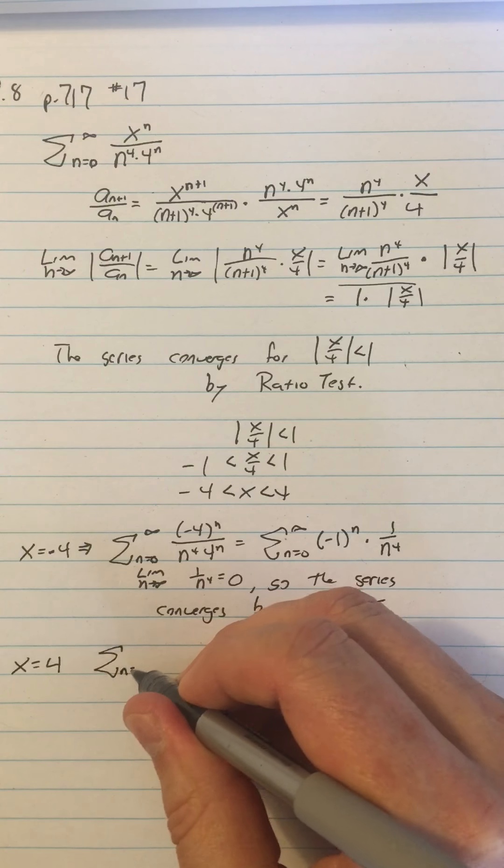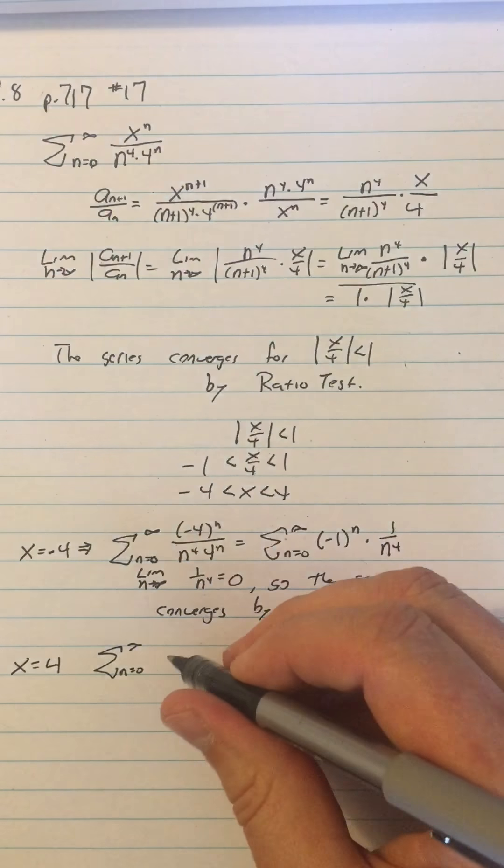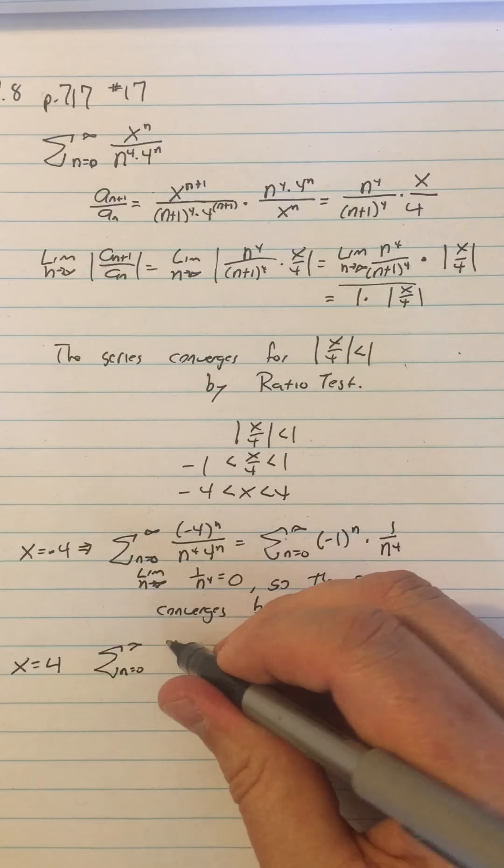So I have sum from n equals 0 to infinity. This time I'm going to put in 4 for the x, so I have 4 to the n over n to the fourth times 4 to the n. This one's even nicer because the 4 to the n's just cancel out directly: n equals 0 to infinity of 1 over n to the fourth.